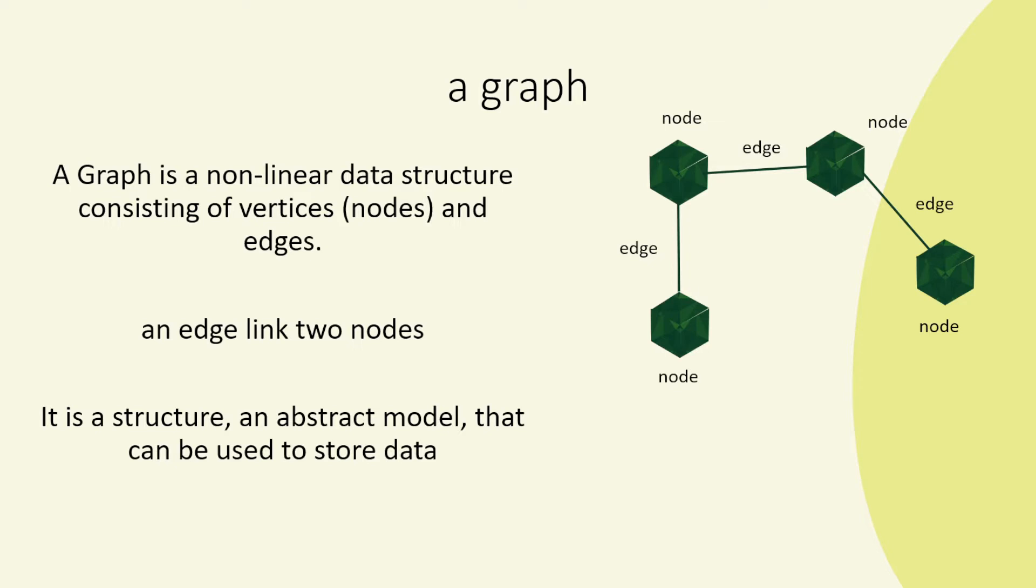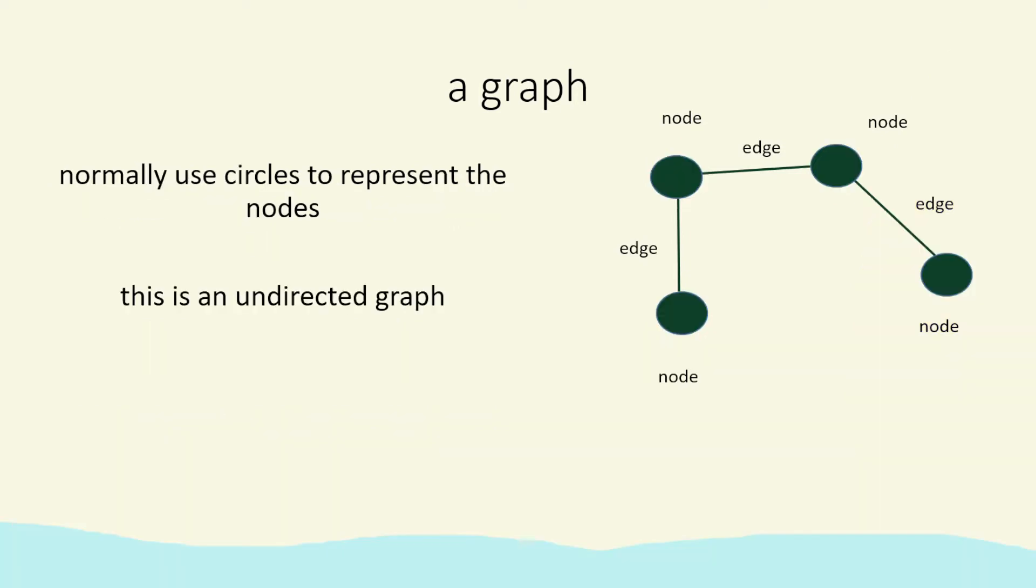We can think of this as a type of structure, an abstract model, which we can use both to model areas such as networks in real life and also to store data. Normally we use circles to represent the nodes.